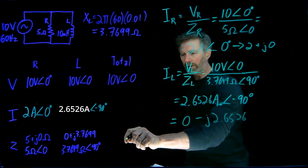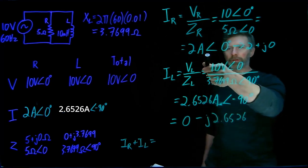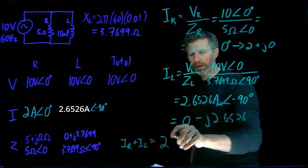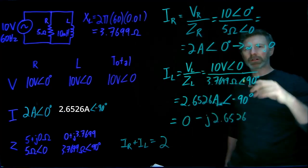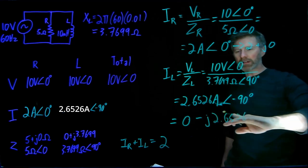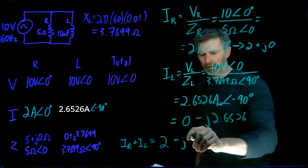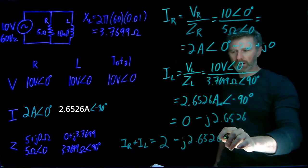When I add those currents together, the current through the resistor only has a real component, so I get 2 for the real part. For the imaginary part, the resistor has zero imaginary component whereas the inductor is all imaginary, so I get minus j2.6526 amps.